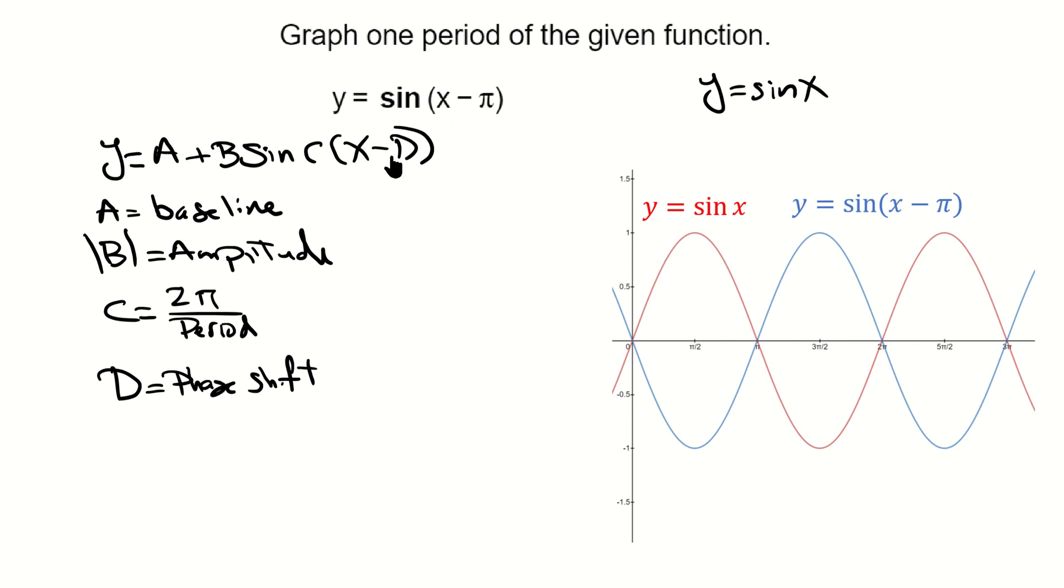The regular sine curve starts at zero. This one is simply going to be shifted pi units to the right. Remember that with horizontal shifts, when there's a minus here that's an actual shift to the right.